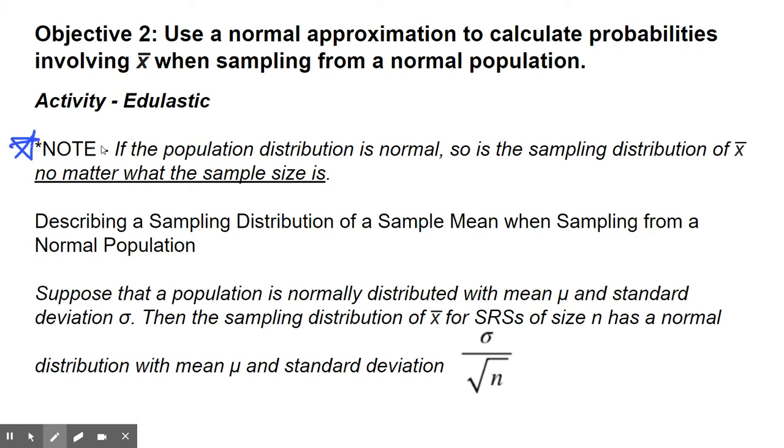Now that you've returned from the activity, this note should mean something to you. The note says if the population distribution is normal, then your sampling distribution of the sample mean x-bar will also be normal, no matter what the sample size is. This is very important. If you remember from the activity, the top graph was the population and we kept it as normal.